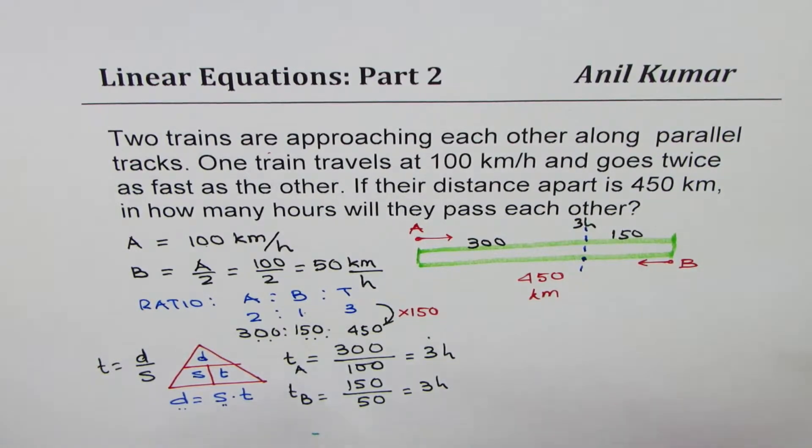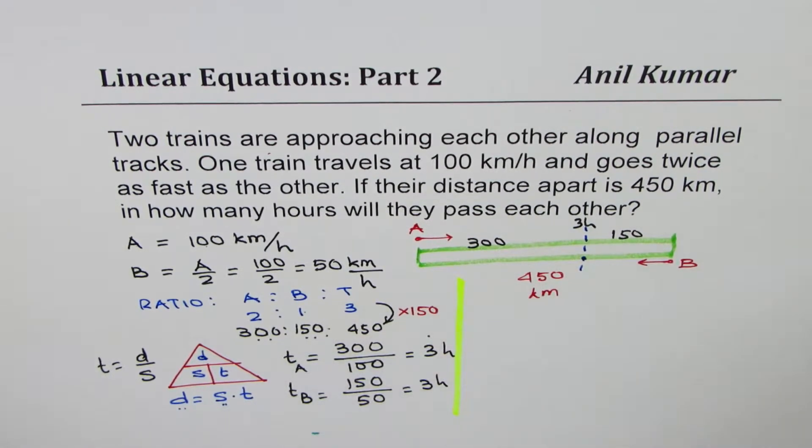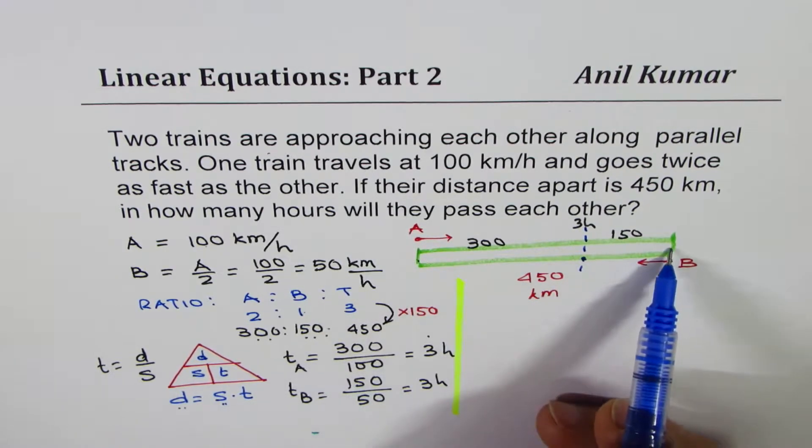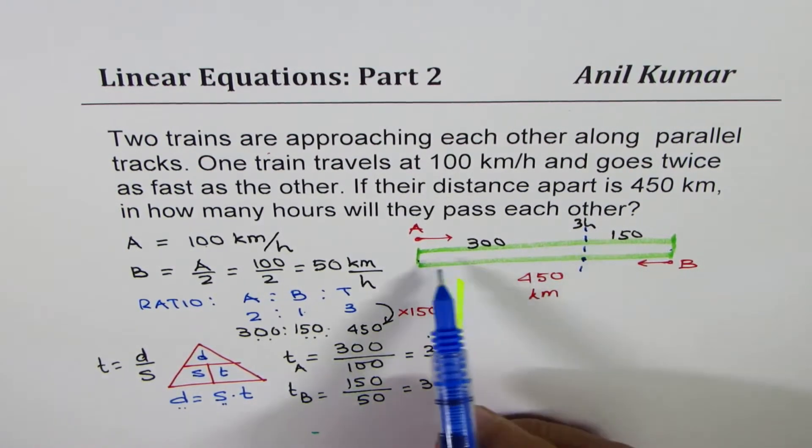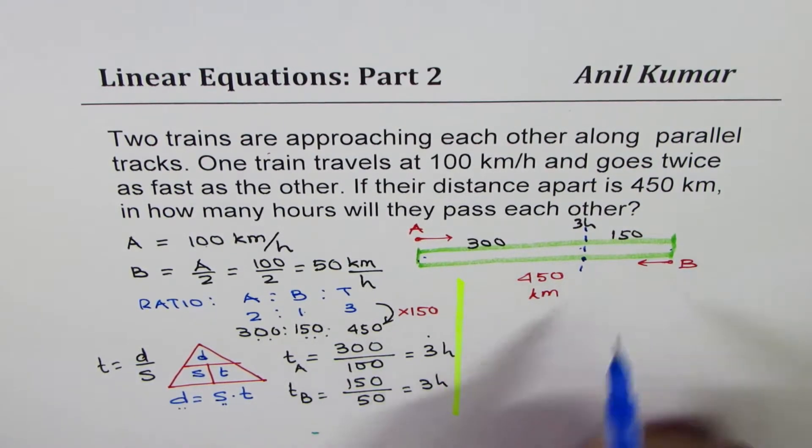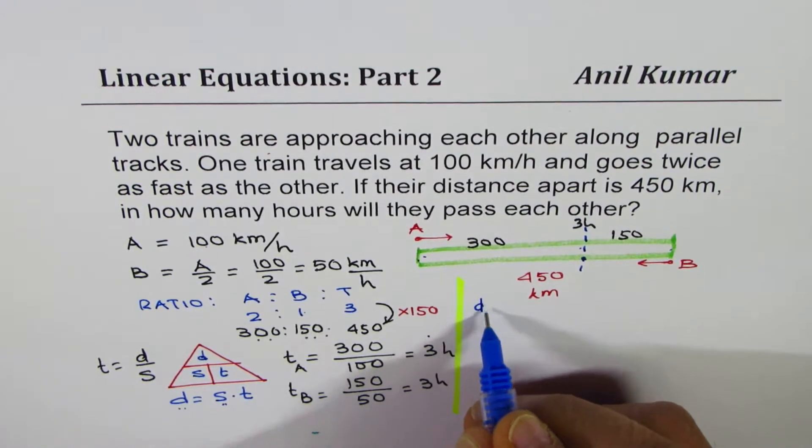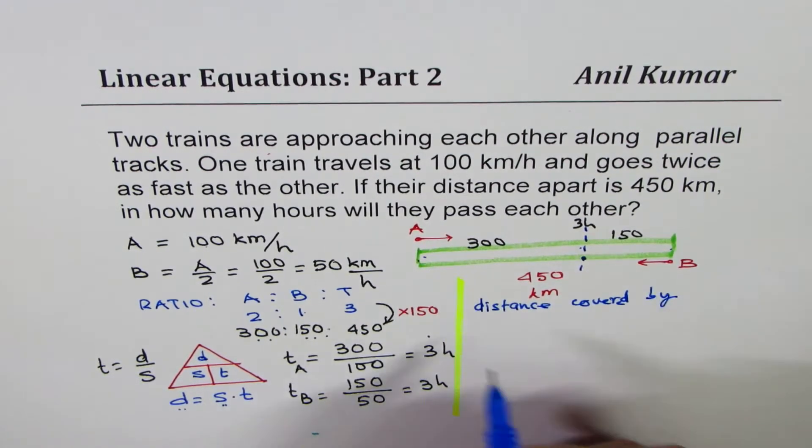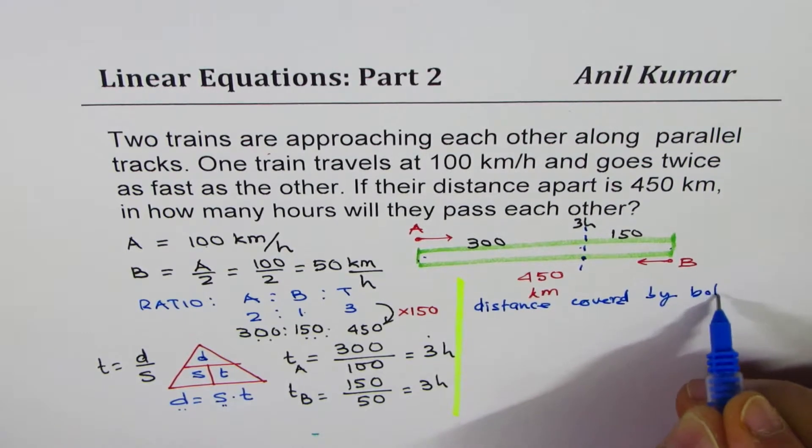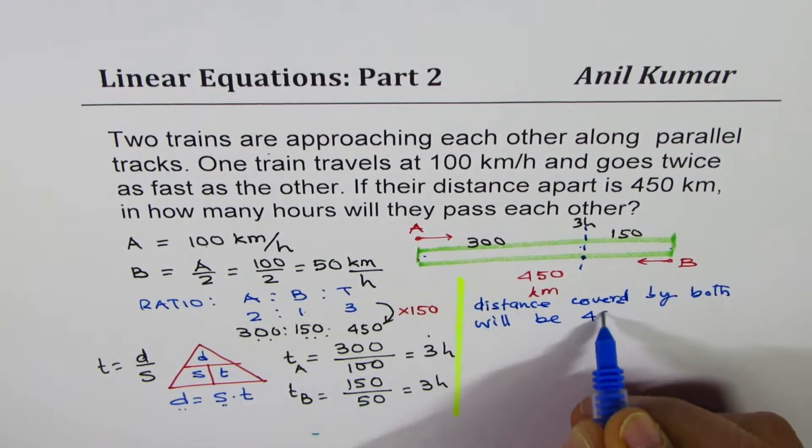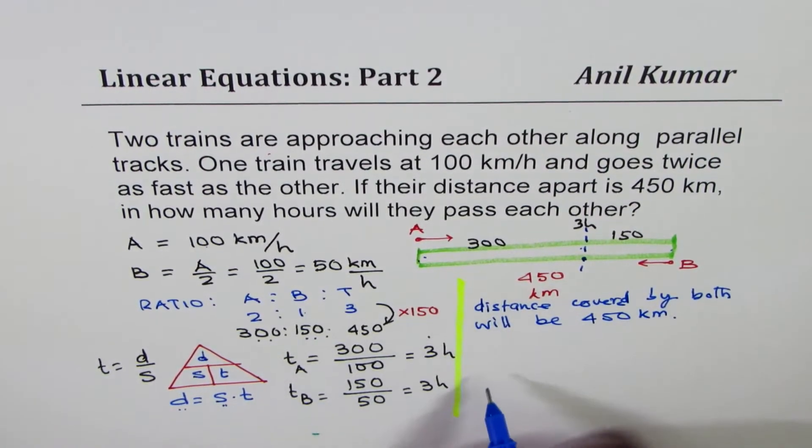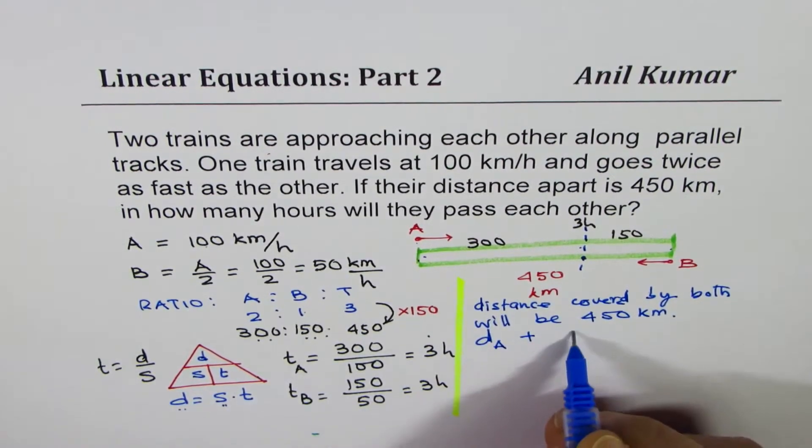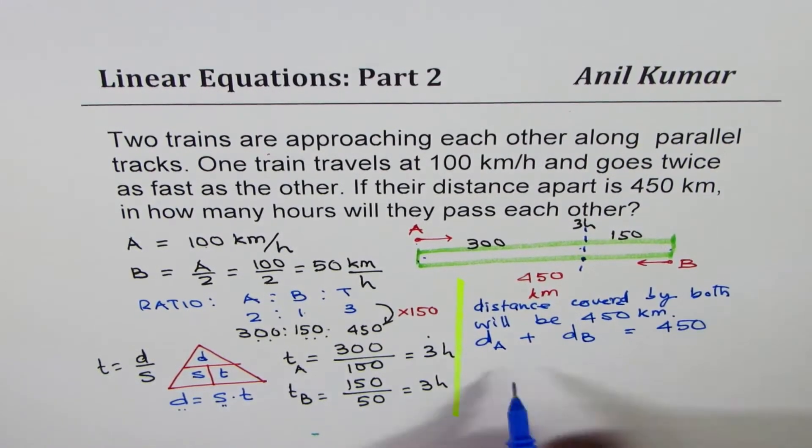Now this is one of the solutions which some students can do. The other solution which I'll provide here is using the concept that total distance between them was 450. So whenever they meet, distance covered will be 450. So what we are saying here is, distance covered by both will be 450 kilometers. Whenever they meet, distance covered by A plus distance covered by B should be 450. This is what we are trying to say.